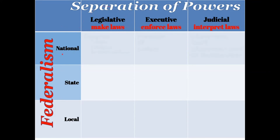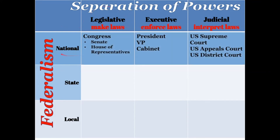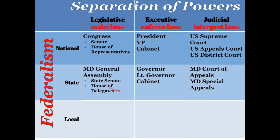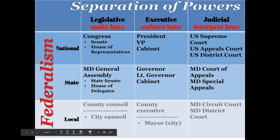But at each level of our federal structure, there is again this separation of powers into legislative, executive, and judicial. We see that same structure recapitulated at the state level — a separation of powers: legislative, executive, judicial. And we even see that same structure repeated at the local levels with legislative, executive, and judicial — because it works quite well.